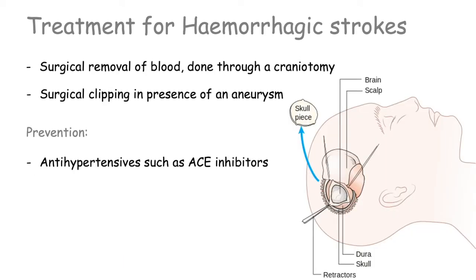For hemorrhagic strokes, if the area of bleeding is large, surgery may be needed to remove the blood, relieve pressure in the brain, or repair any ruptured blood vessels. This is usually done through a craniotomy, where a section of the skull is removed to allow access to the brain. In the presence of an aneurysm, surgical clipping may take place — a clamp is placed at the base of the aneurysm to stop blood flow and prevent it from bursting or bleeding again. Patients may also receive antihypertensive medications such as ACE inhibitors, as high blood pressure is the main risk factor for hemorrhagic strokes.